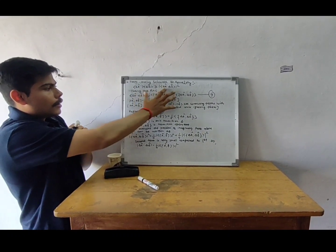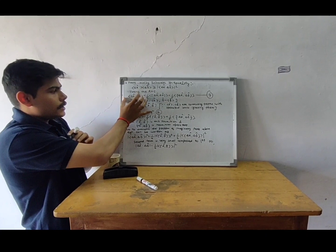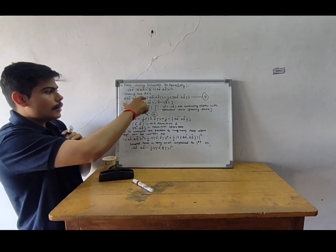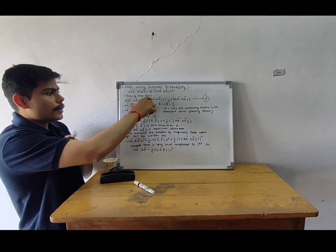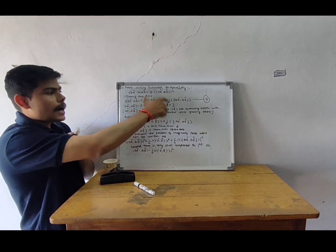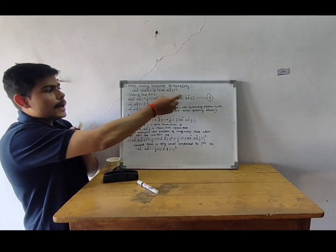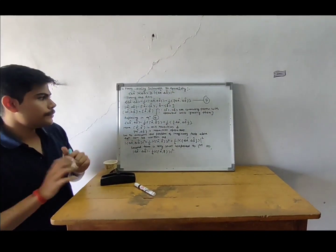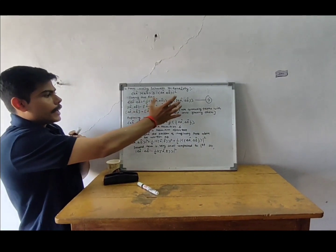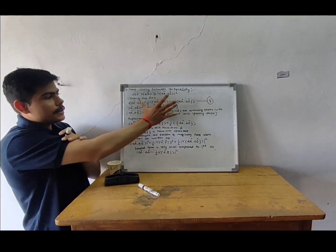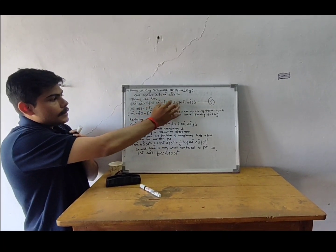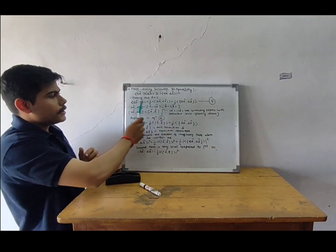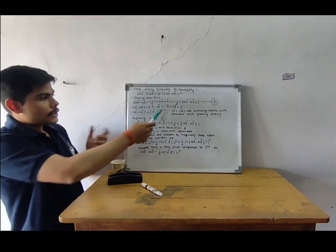First, we write the expectation value of del A times del B in the form: half of the expectation value of the commutator [del A, del B] plus half of the expectation value of the anti-commutator {del A, del B}. This is equation 4. This can be verified using the commutation and anti-commutation relations.